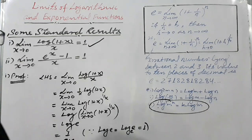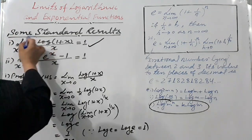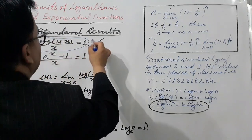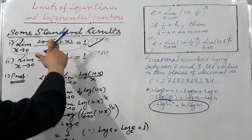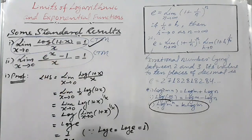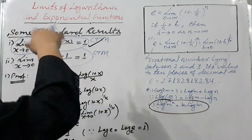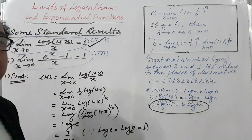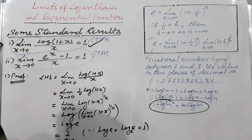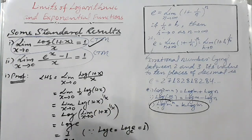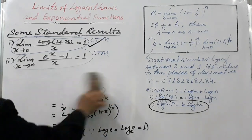While solving questions on logarithmic functions, we can use this standard result. You have to memorize it - CTM, which means committed to memory. This result and the next one both need to be memorized. When we start questions on limits of logarithmic and exponential functions, we will use these two results to evaluate limits. The first result is clear. Let's move on to the second result.